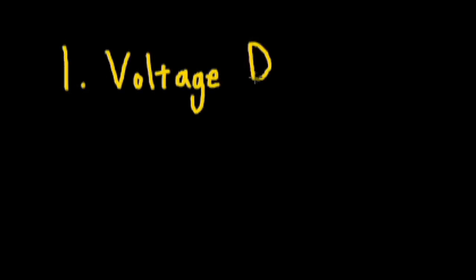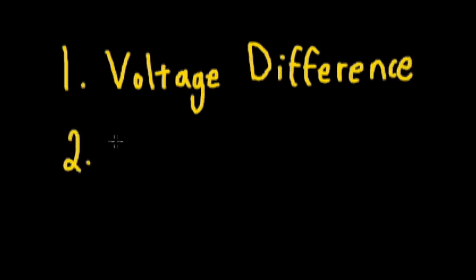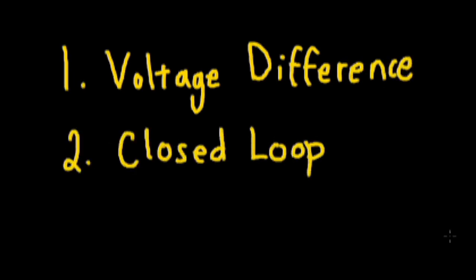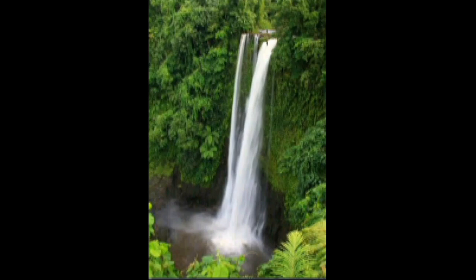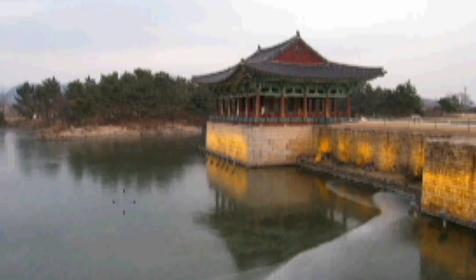We need two things for electricity to flow, a voltage difference and a closed loop. For a voltage difference, if you have a high voltage point and a low voltage point, then electricity can go between them. However, if there's no voltage difference, then no electricity will flow.